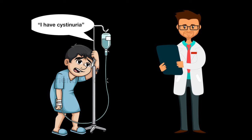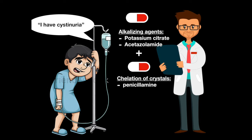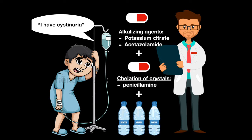The treatment of cystinuria is to increase hydration and urinary alkalinization and chelation. The alkalinizing agents potassium citrate and acetazolamide, and the chelating agent penicillamine, combined with the increase in hydration, will increase the solubility of cystine, allowing it to dissolve and thus removing the crystals.